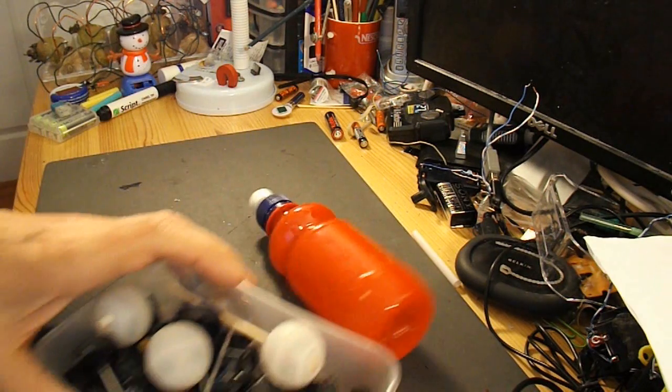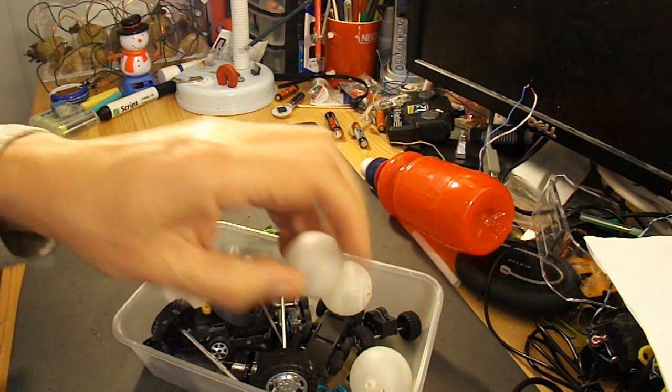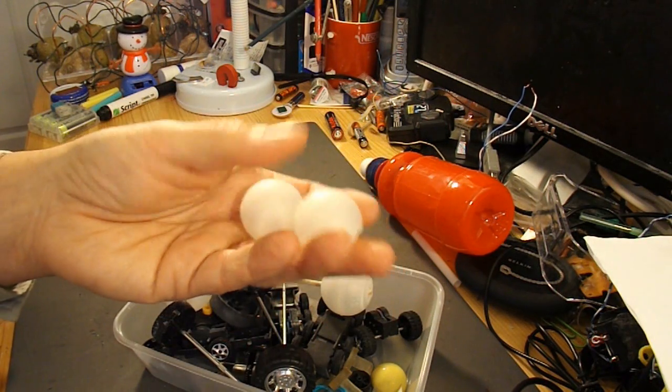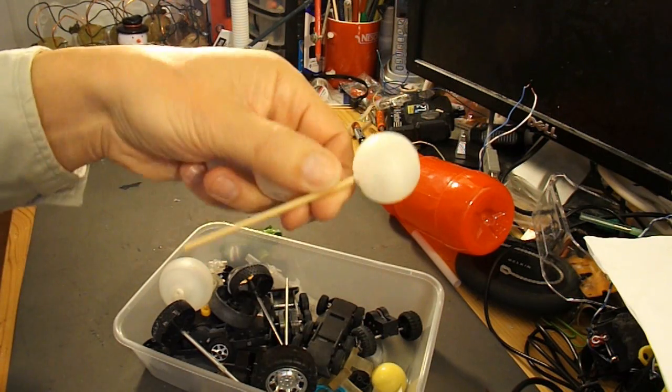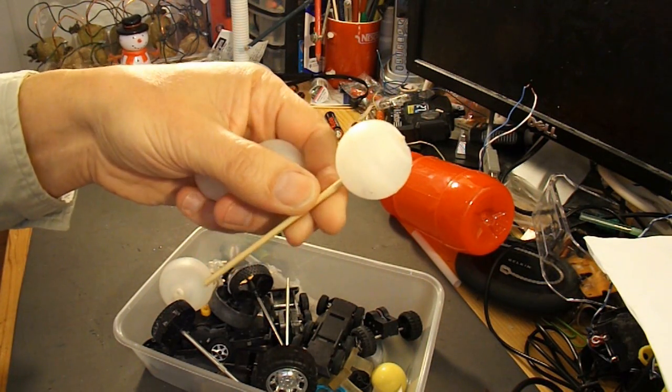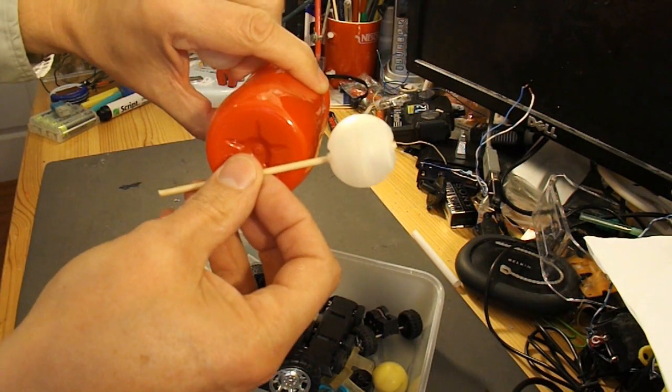And for wheels, I've got a selection of bits and pieces, but I think I'm going to use these plastic balls. I've used them before, in fact that one's still got an axle on it, so that'll be the wheels.